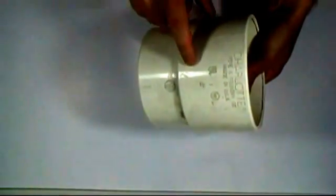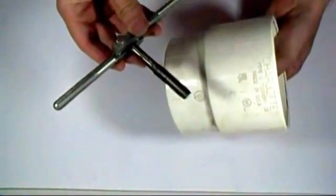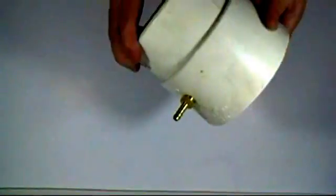Begin by drilling a hole in the side of the adapter to allow you to screw in the hose barb. You're welcome to thread the hole if you wish. Use teflon tape on the hose barb and screw it in. It should look something like this when you're done.